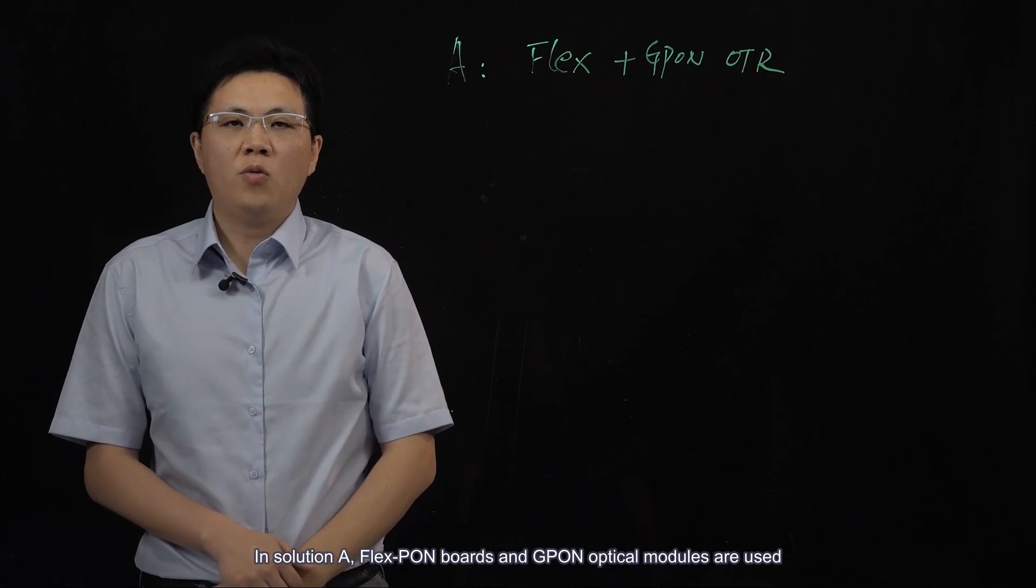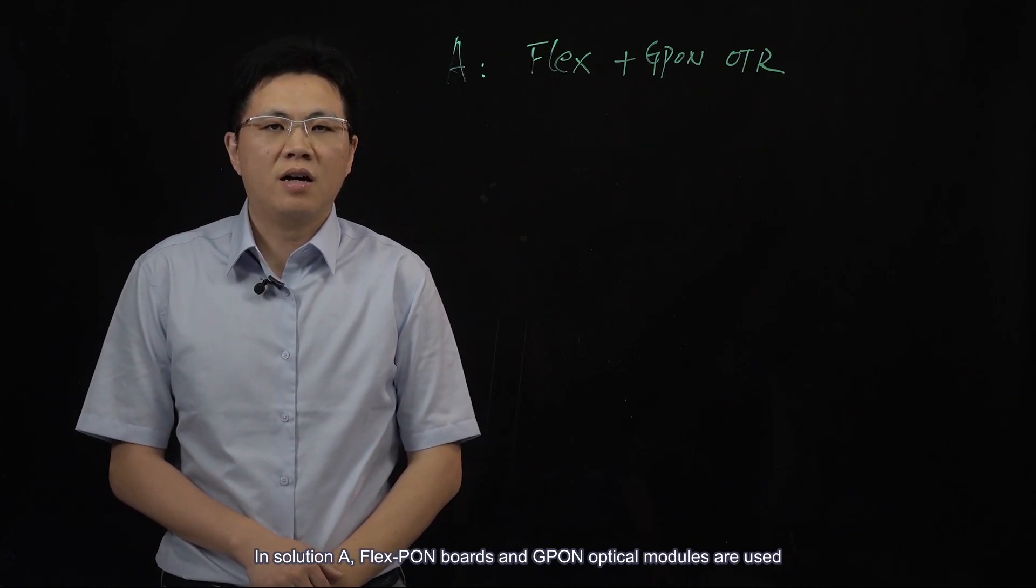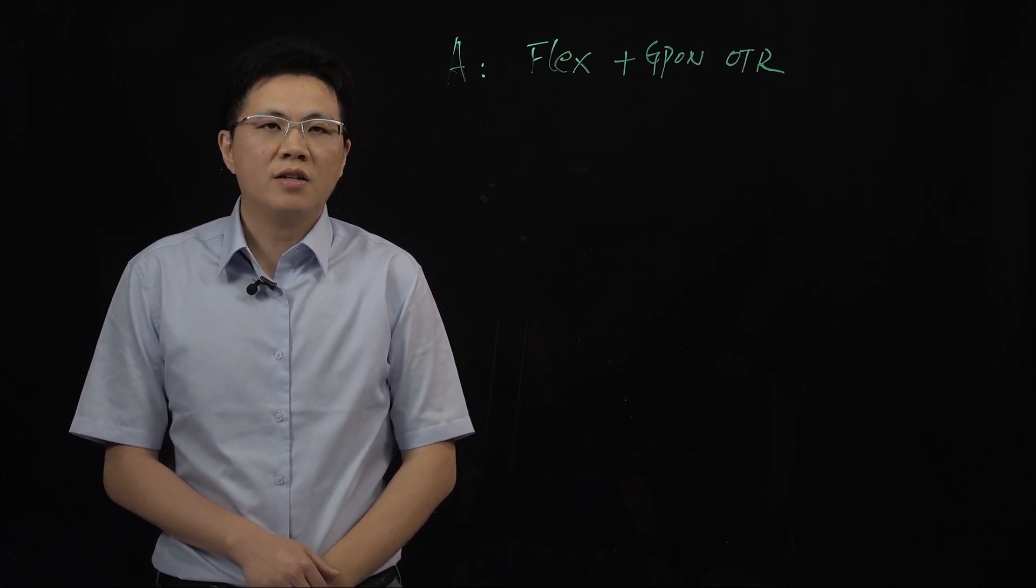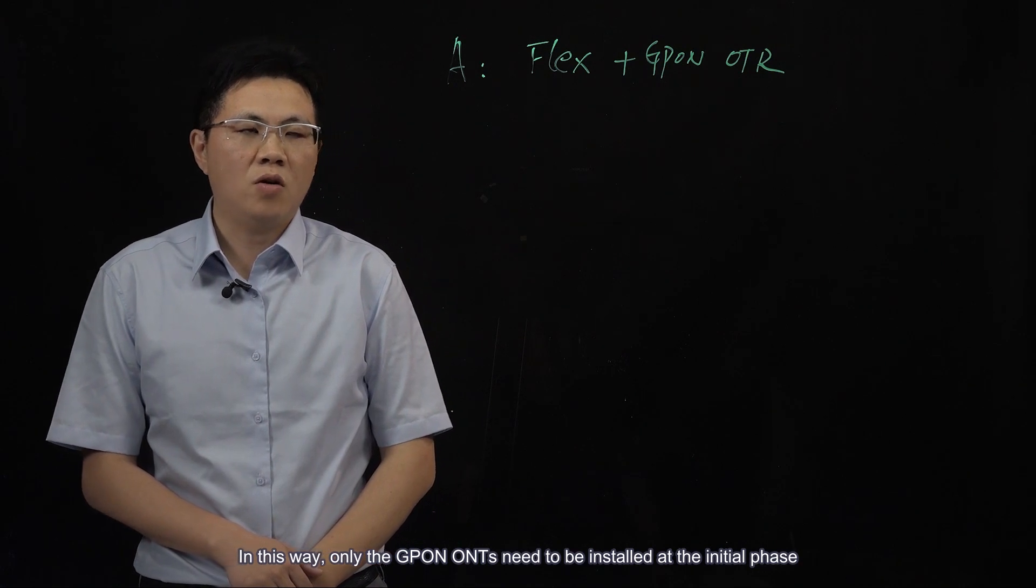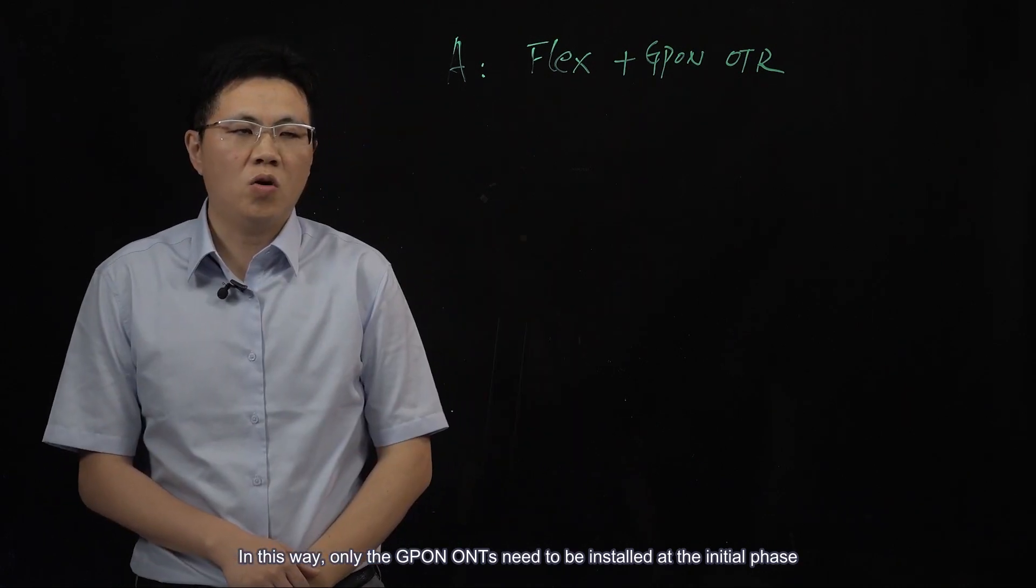In solution A, FlexPon boards and G-Pon optical modules are used. In this way, only the G-Pon ONTs need to be installed at the initial phase.